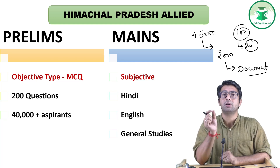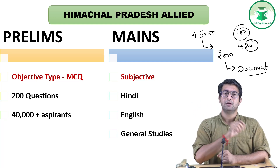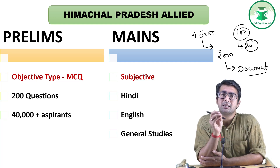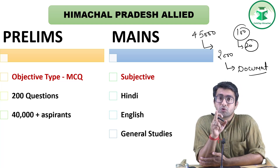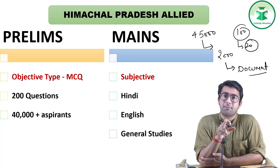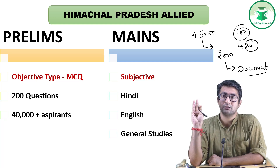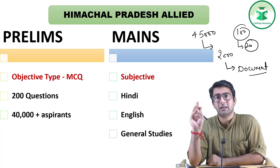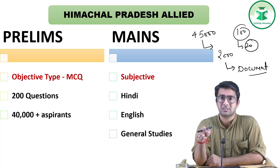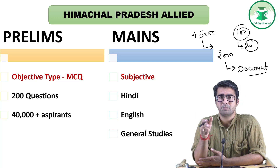The Prelims is objective in nature — 200 questions, 200 marks, 3 hours. There is negative marking: one-fourth marks deducted for each wrong answer. The Mains examination, on the other hand, is subjective — similar to college/university exams where you write answers in three hours.